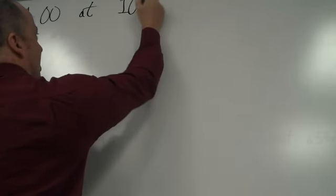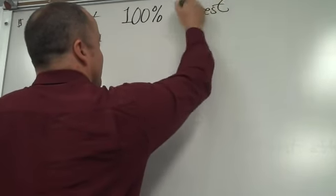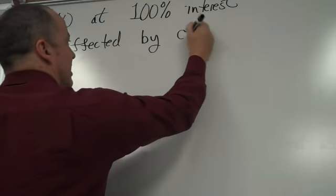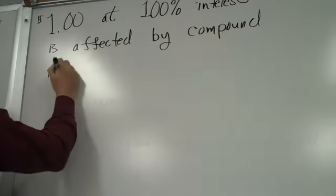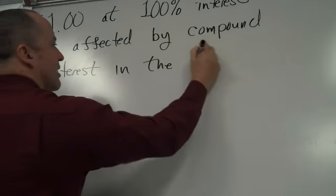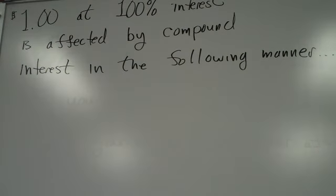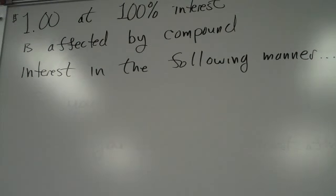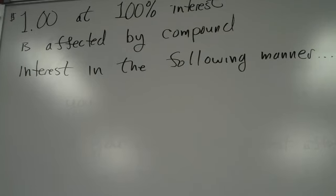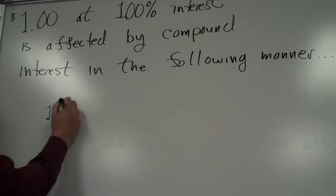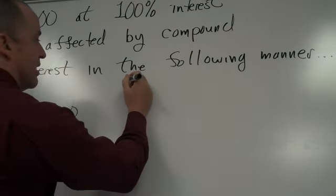There was an experiment that I want you to imagine. We'll make a table based on it. The experiment is $1 at 100% interest is affected by compound interest in the following manner. This is actually a thought experiment. Because no one's ever going to invest just $1, and no one is going to give you 100% interest. That'd be amazing. But if they did, we're going to make a little table here. Don't start writing the table yet until I figure out how big it's going to be. But here's my $1.